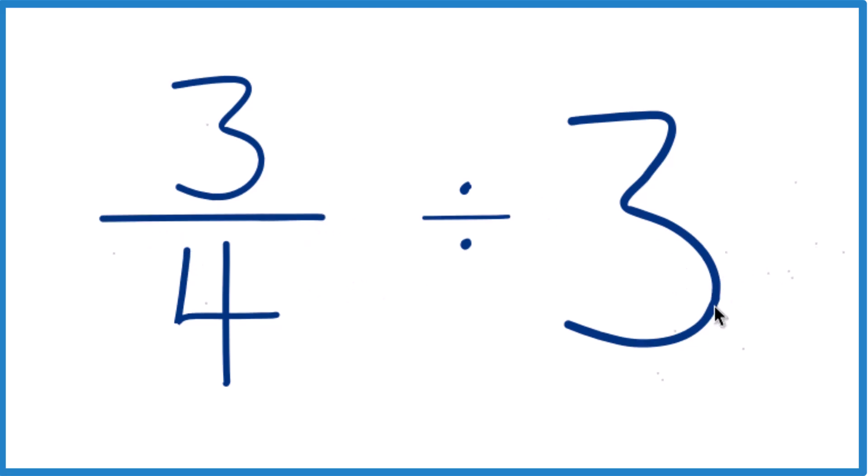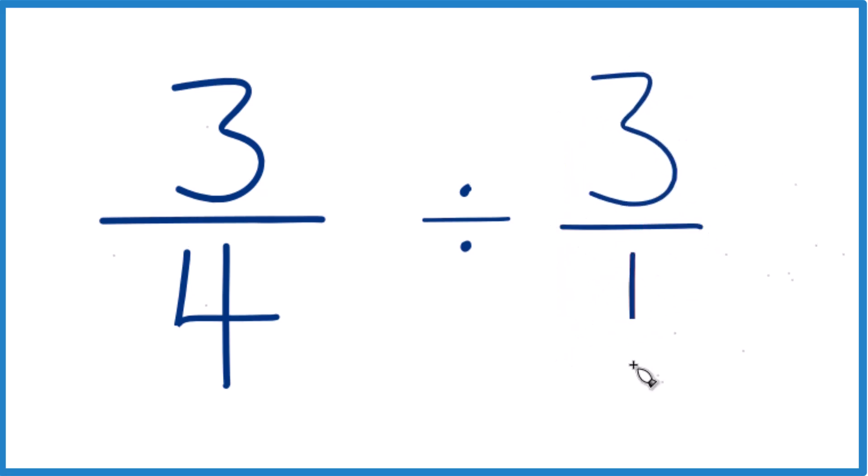Let's instead of 3, let's call this 3 over 1. 3 divided by 1, that's just 3. So we haven't changed anything, but now everything lines up real nice.